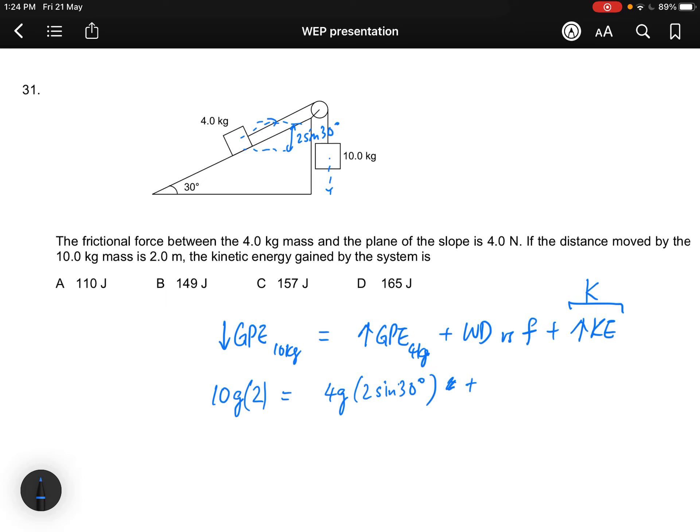Work done against friction will be equals to 4 Newton times 2 meters, plus K. So you can solve. What is K? Answer will be option B, 149.